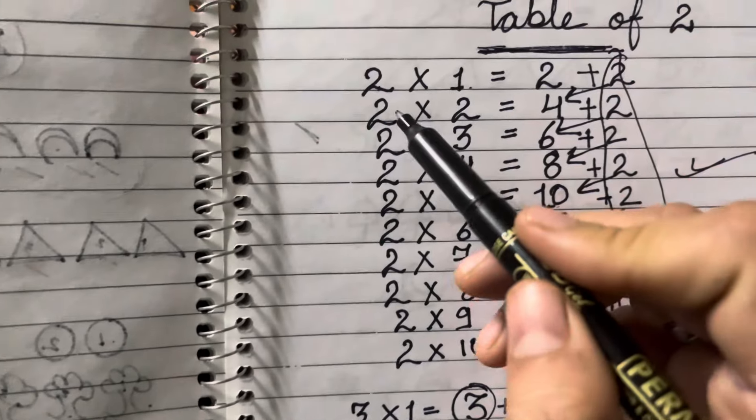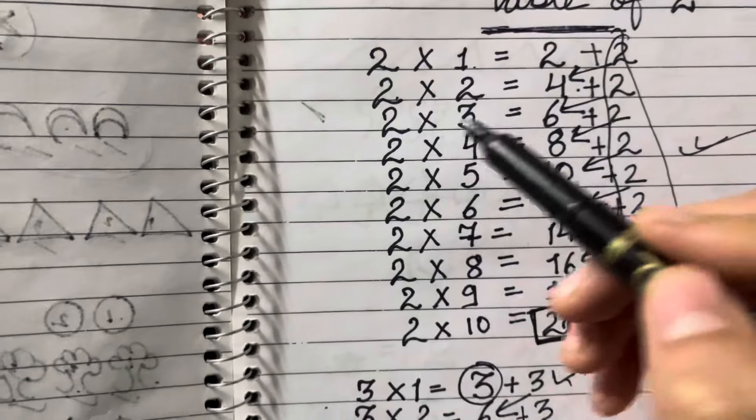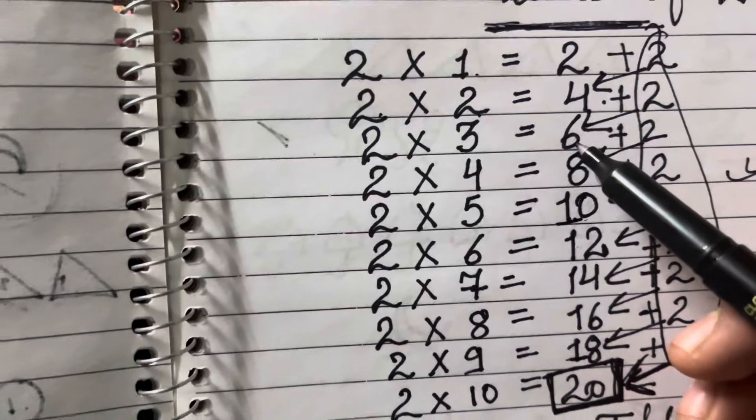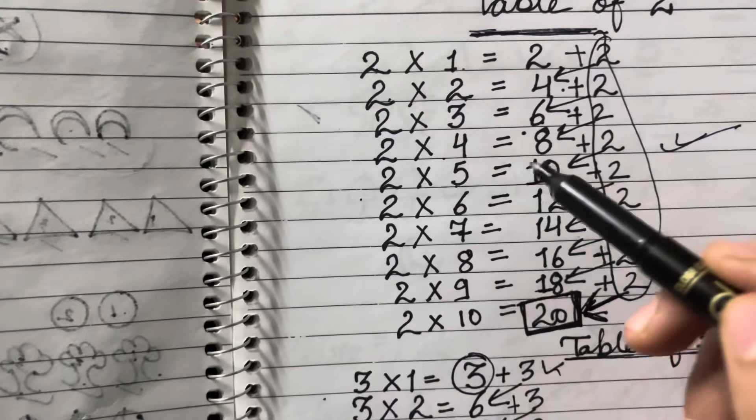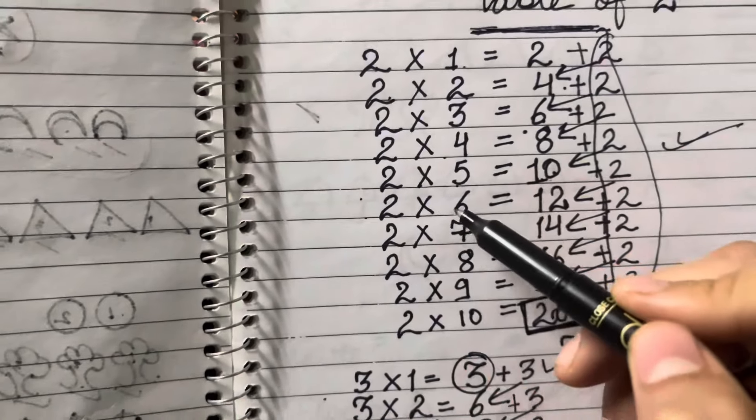2 1's are 2, 2 2's are 4, 2 3's are 6, 2 4's are 8, 2 5's are 10, 2 6's are 12.